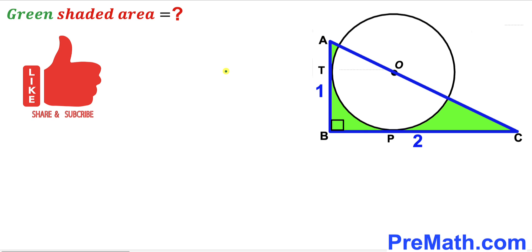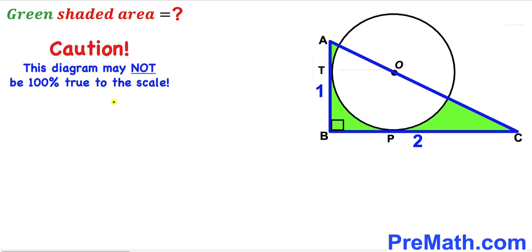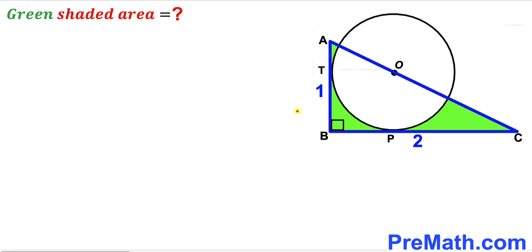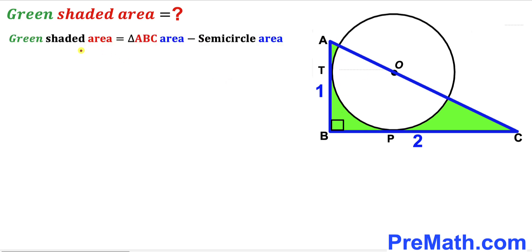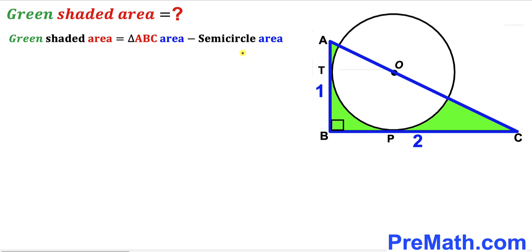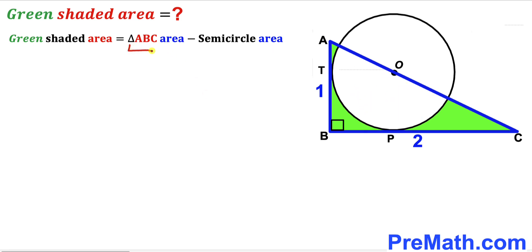Please don't forget to give a thumbs up and subscribe, and keep in mind this figure may not be 100% true to scale. Our task is to calculate the area of the green shaded region. We can observe that this green shaded area equals the area of the big right triangle ABC minus the area of the semicircle. So our task is to calculate both the triangle area and the semicircle area.